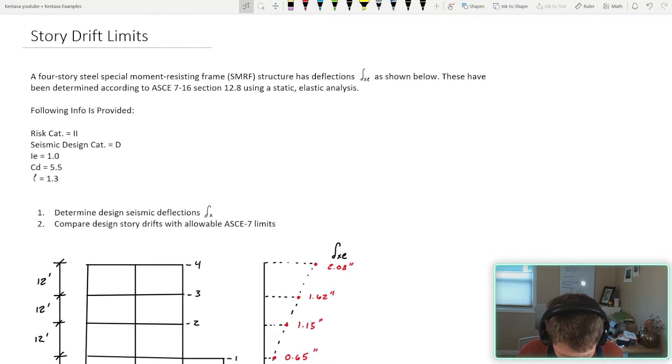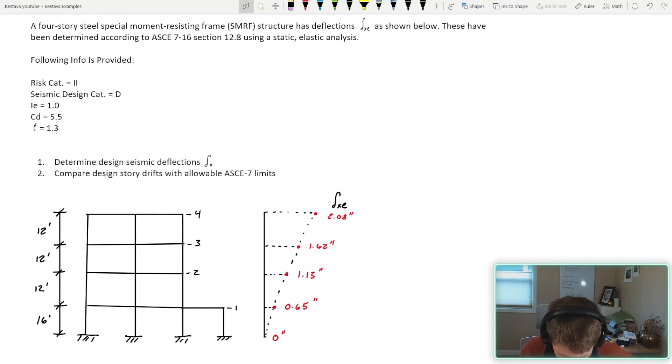Our problem statement opens with a four-story steel special moment resisting frame, an SMRF structure. We have deflections given below, determined according to ASCE 7-16 section 12.8 using a static elastic analysis. We did an ELF analysis to get these values. We have additional information: risk category, seismic design category, importance factor, C sub D which is dependent upon your lateral system. Ours are moment frames, and a rho of 1.3. We have two things we're solving today: determine the design seismic deflections, and number two, compare the design story drifts with allowable story drifts permitted under ASCE 7 limitations. We're going to dip our toes into everything drift-related today.